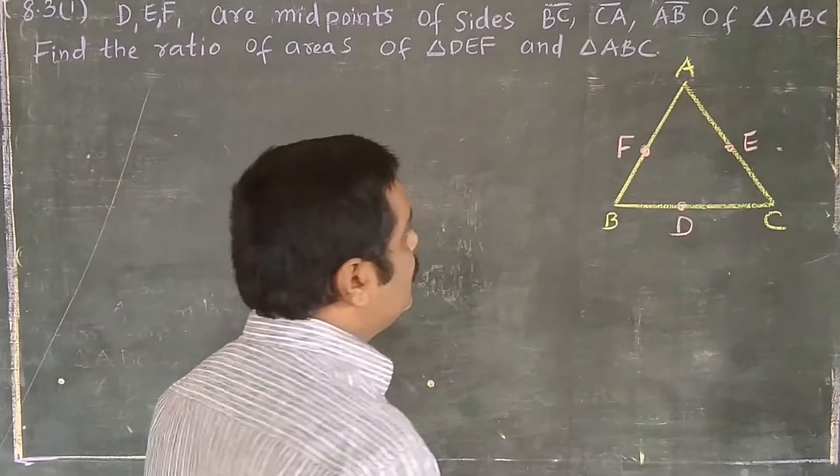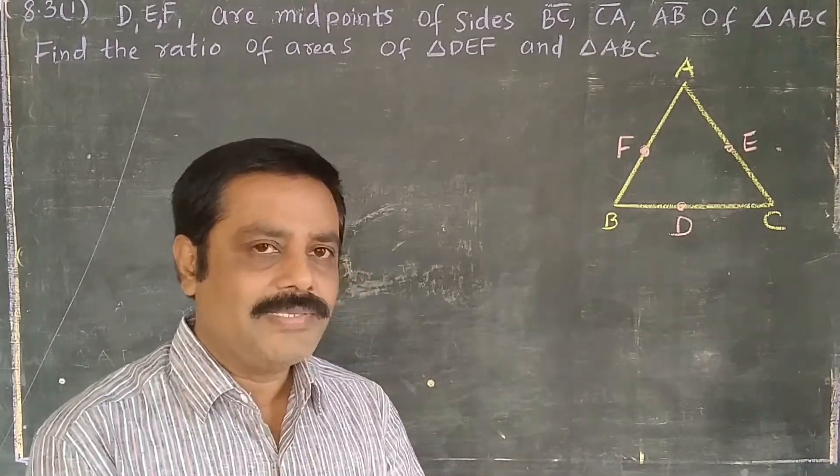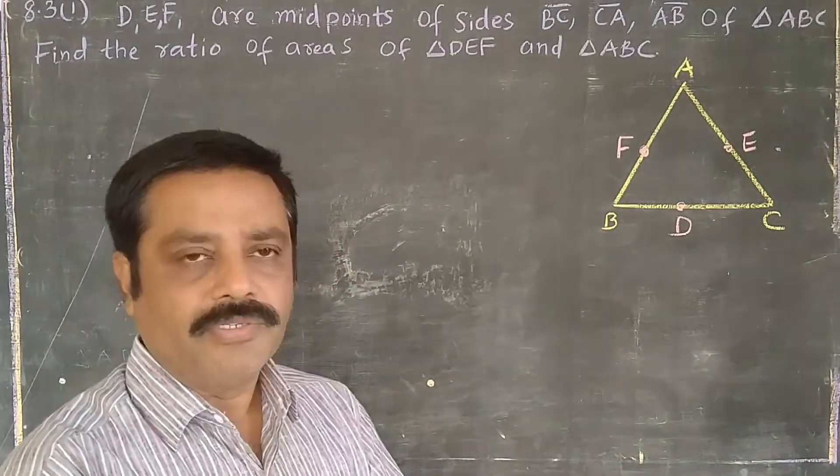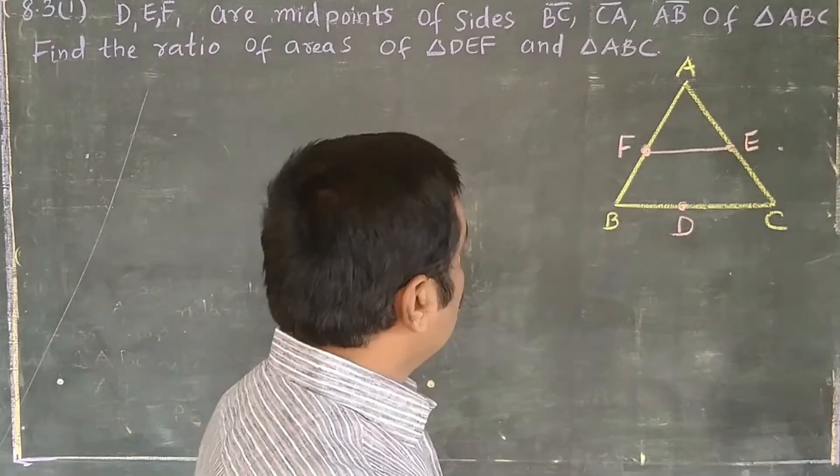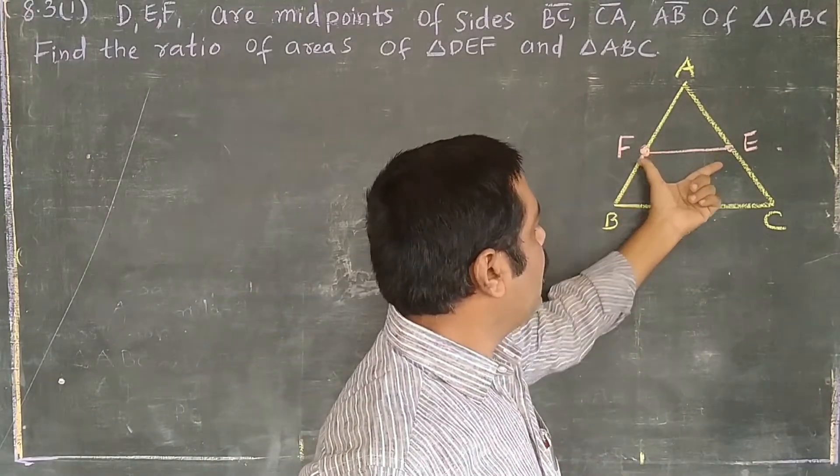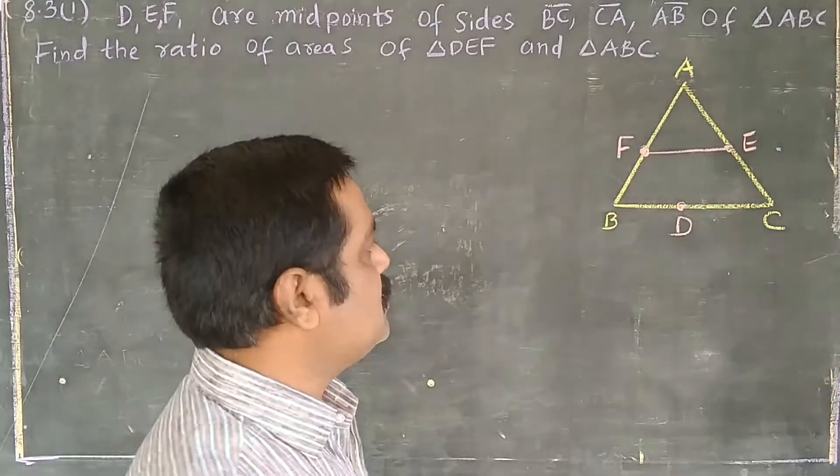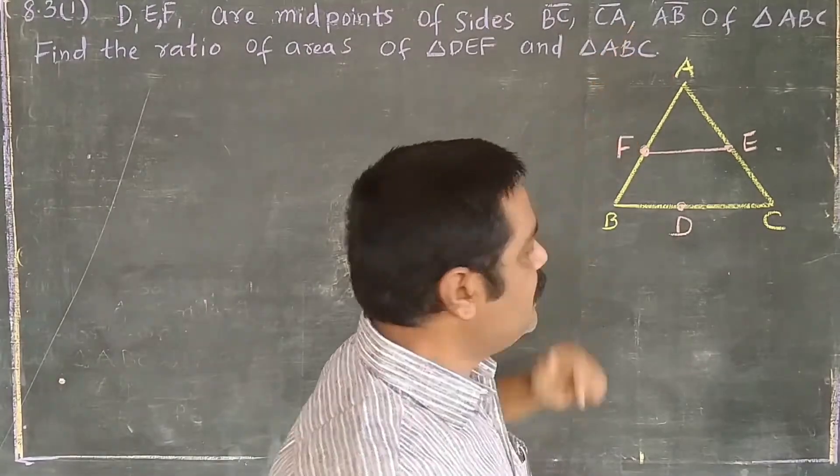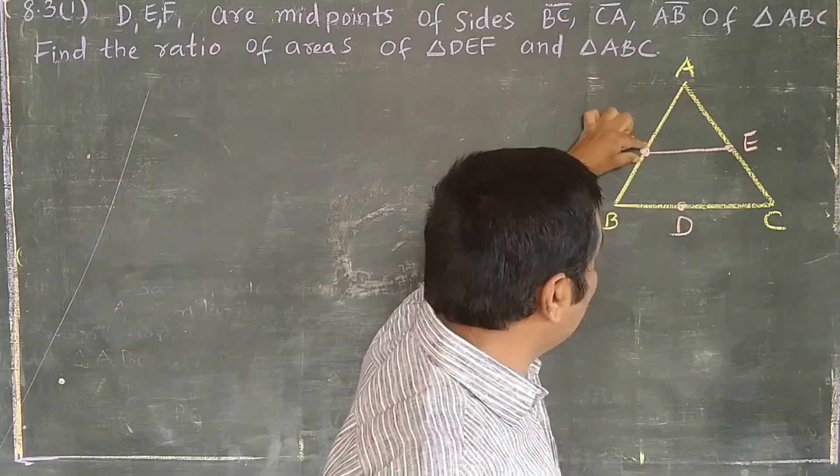Already earlier in chapter 8.1 exercise, I think maybe the third question, when you join the midpoints, that line is exactly parallel with the third side according to the basic theorem. It's the converse of basic proportionality theorem.